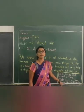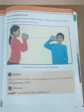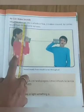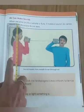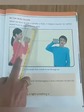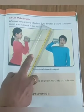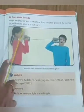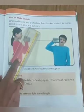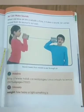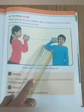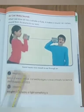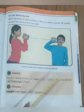Now open your reader, page number 139. Air can make sound. When we blow air into the whistle or flute, it makes a sound. Air carries sound from its source to our ears. Can you blow the air? The sound will come. The sound travels from mouth to ear through the air.